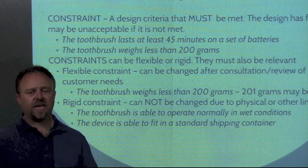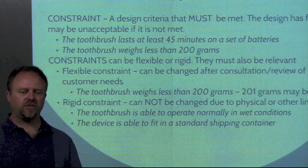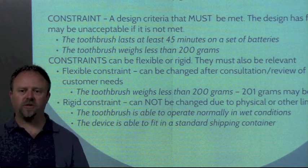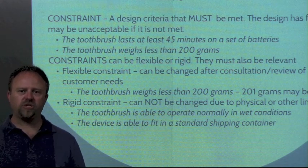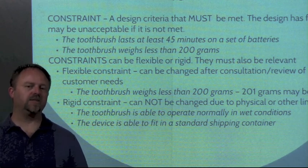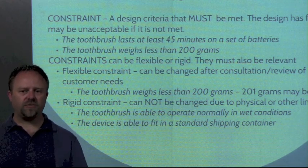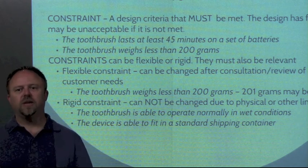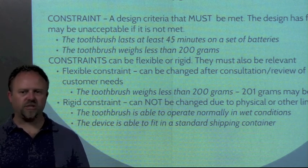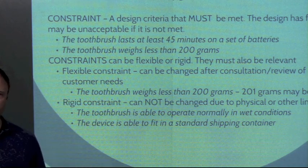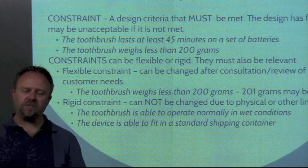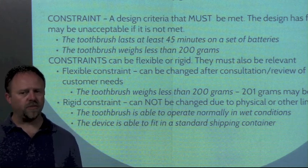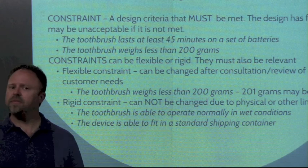We can have a number of goals, and some of these goals may relate to constraints. A constraint is something the design has to do — if it doesn't achieve this function, the design is not acceptable. For example, the toothbrush had to last 45 minutes on a single set of batteries: if it goes less than 45 minutes we're good; if it's over 45 minutes, we need to change the design. Or maybe the toothbrush weighs less than 200 grams is our limit for weight.